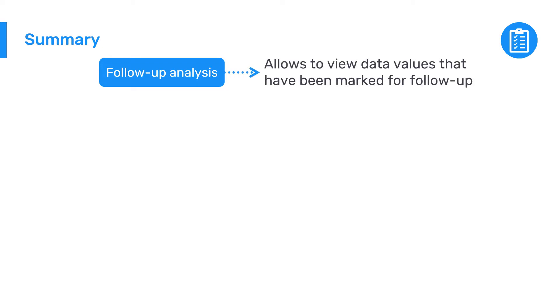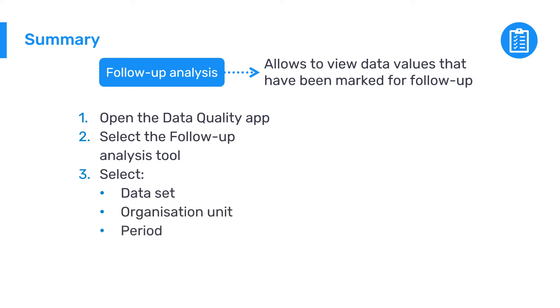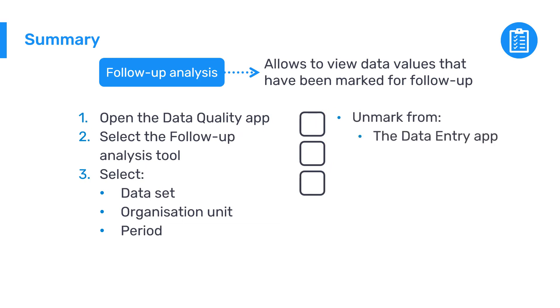To recap, the follow-up analysis tool is a data quality management tool that allows you to easily view data values that have been marked for follow-up. To use it, open the data quality app and select the follow-up analysis tool. Within the tool, select the data set, organization unit, and period that you want to review, and you'll then be able to view the data values marked for follow-up. Each of them can be unmarked either from the data entry app or directly from the list generated in the follow-up analysis tool.